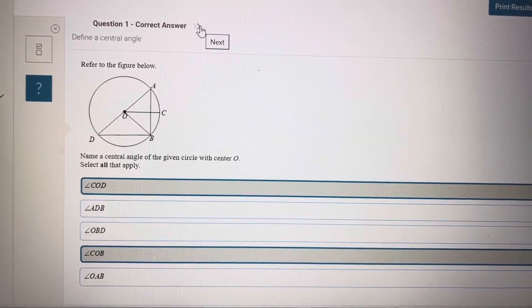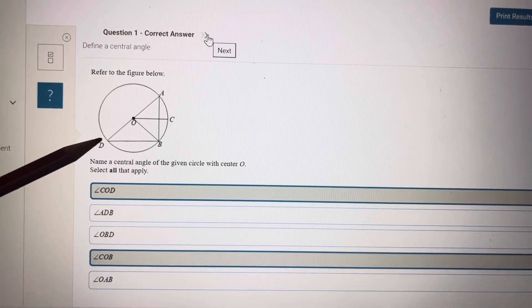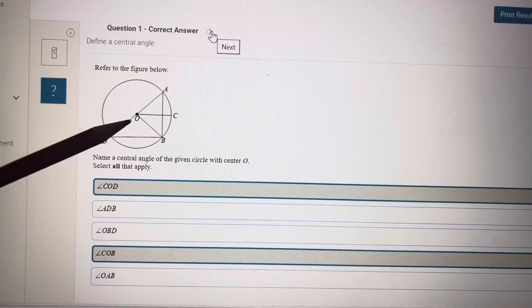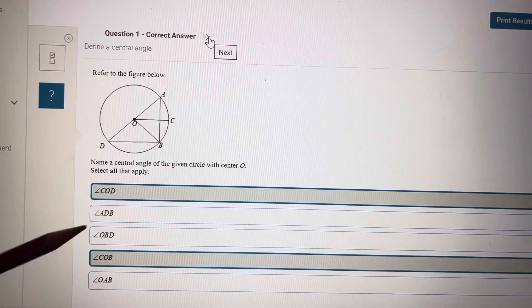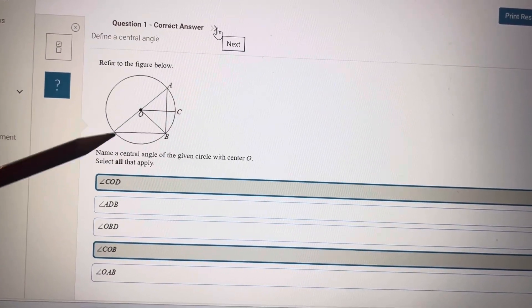Name a central angle of the given circle with center O. Central angle means it's formed by two points, and O must be in the center of the angle. So COD is a central angle, COD.